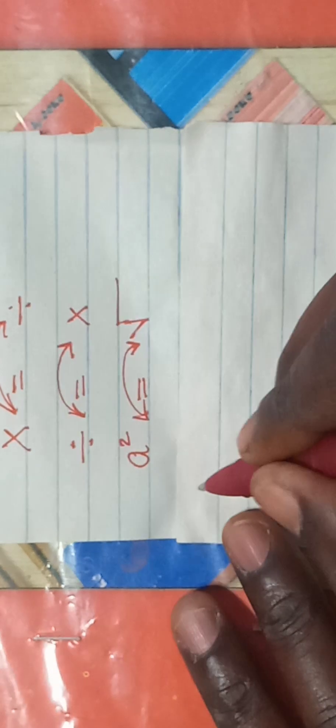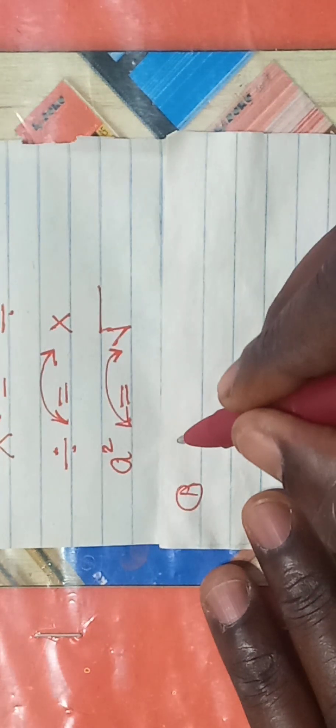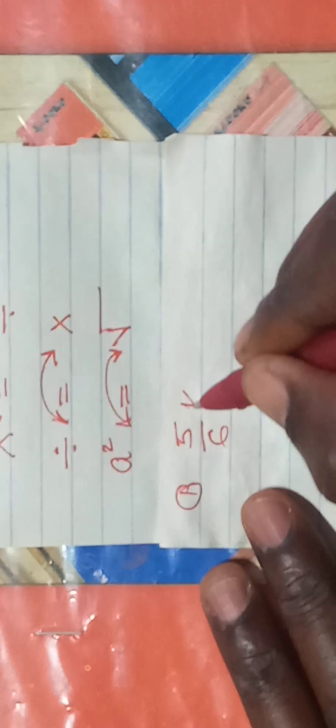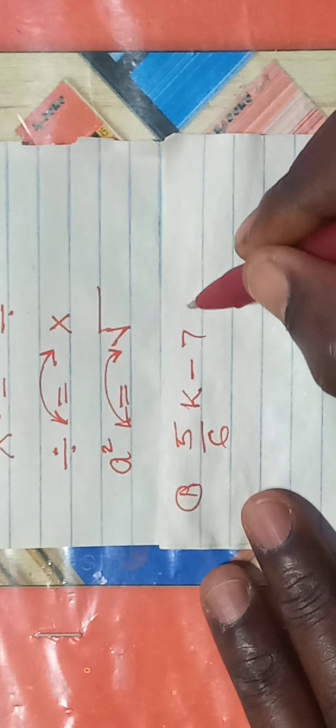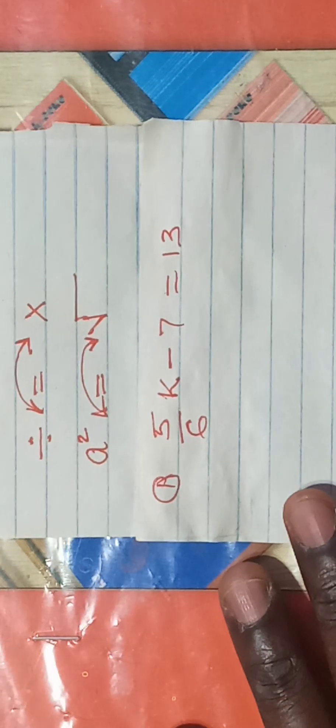I want us to start with an example. Very simple example. 5 over 6k take away 7 is equal to 13. How do we solve such an equation?